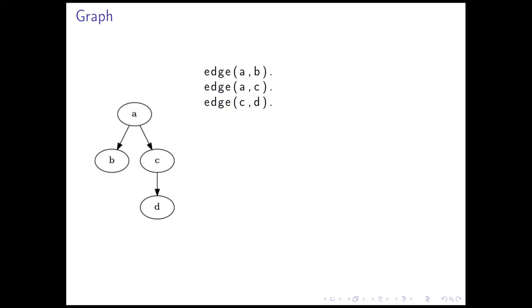We will use the example of a graph to get a taste for logic programming. We can define the graph by stating the edges: there is an edge between A and B, there is an edge from A to C, and there is an edge from C to D. We can then query this program and ask, is there an edge between A and B? Our logic program will answer true. If we query if there is an edge between A and D, it will return false, as you would expect.